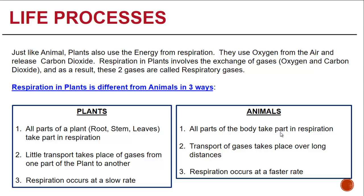Let's compare plants and animals in terms of respiration. In plants, all parts — the root, the stem, and the leaves — take part in respiration. There is little transport of gases from one part of the plant to another, and respiration occurs at a slow rate. In animals, all parts of the body take part in respiration, the transport of gases takes place over long distances, and respiration occurs at a faster rate.